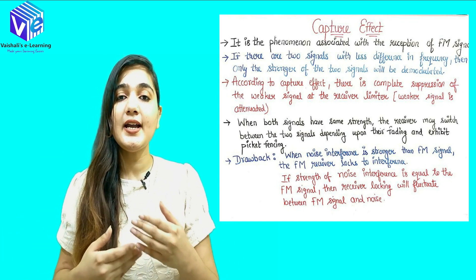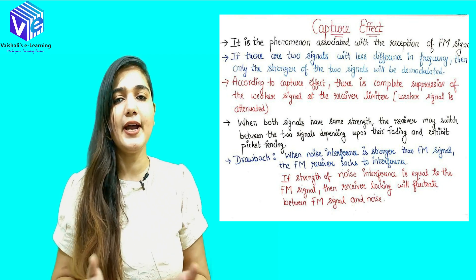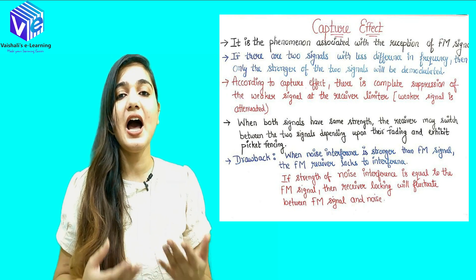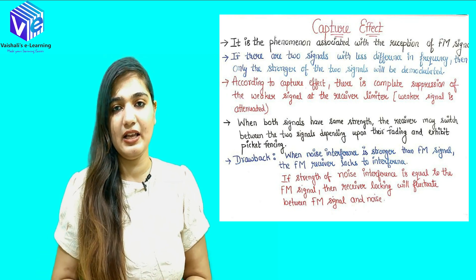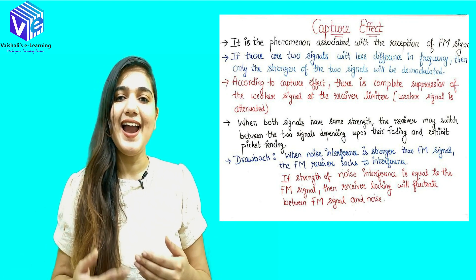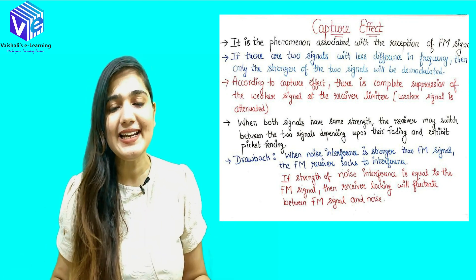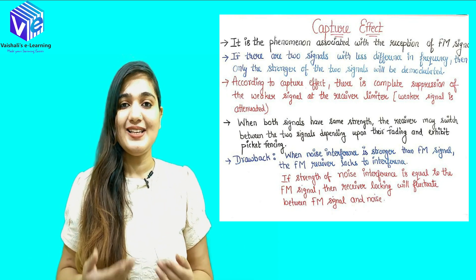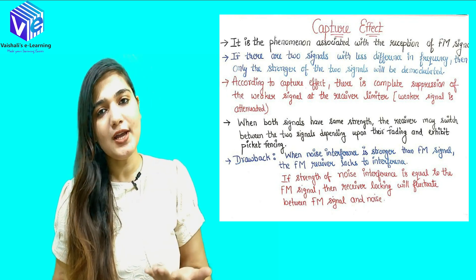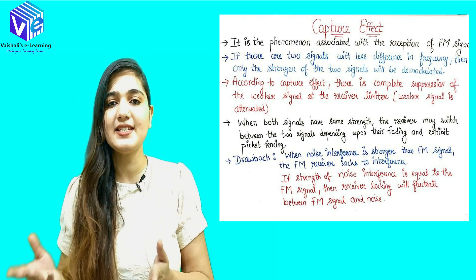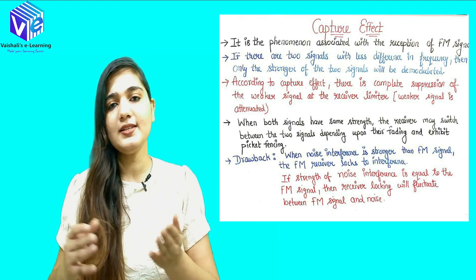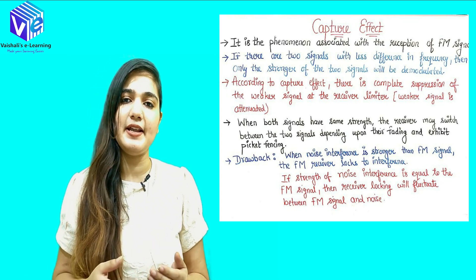There are some drawbacks related to this phenomenon. If a noise interference has higher strength than the signal, then the noise interference would be detected and the signal will be completely suppressed or attenuated — this is undesirable. Additionally, if the noise signal strength is equal to the message signal strength, it will fluctuate between the noise and the message signal depending upon the strength.